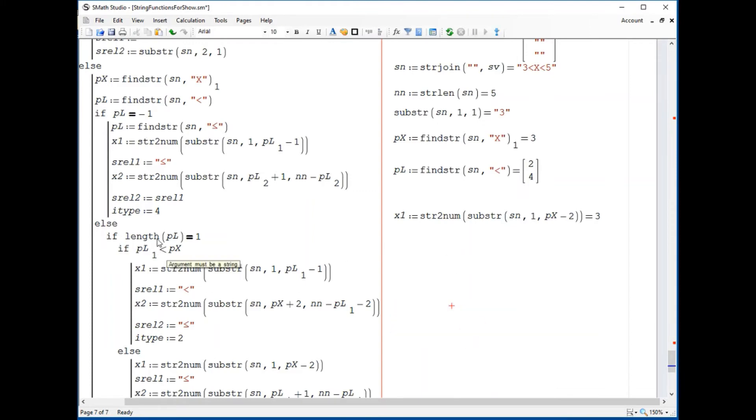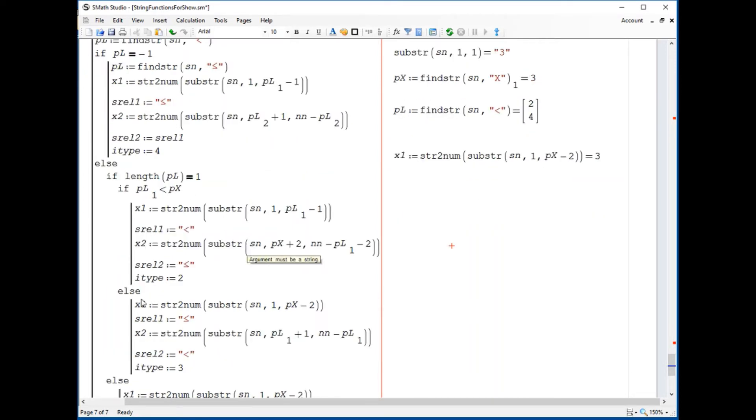I am here, if the length of pl equals 1, and pl is actually not equal to 1, so this is not going to be the case, it's going to be this one. And so x1 is this one, and x2 is this one.